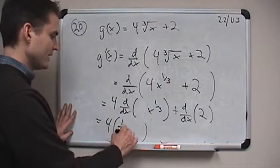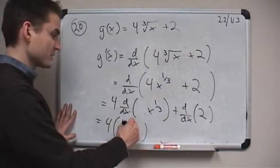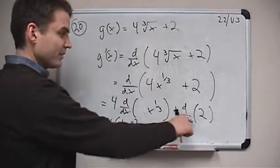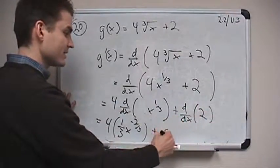1 third x to the power 1 third minus 1, which is negative 2 thirds. And the derivative of a constant, we have a rule for that as well, is 0.